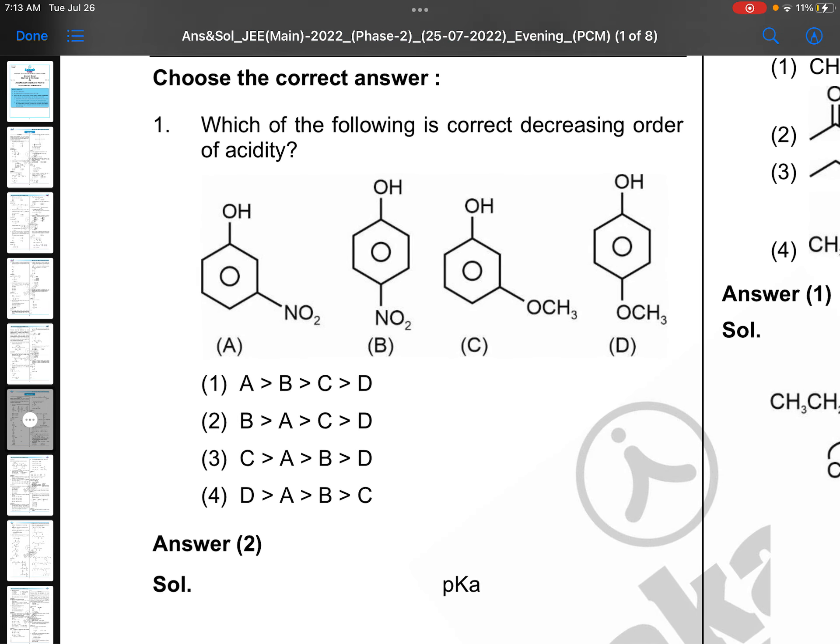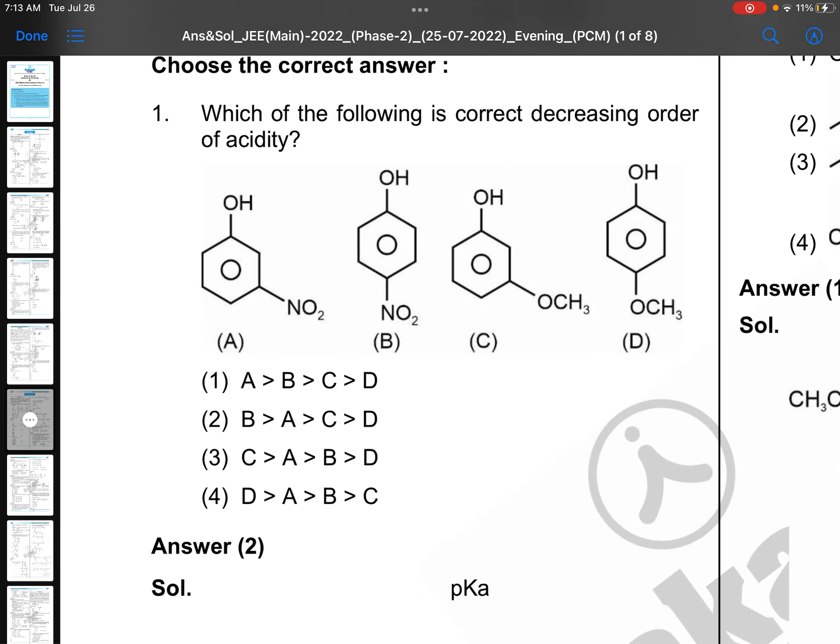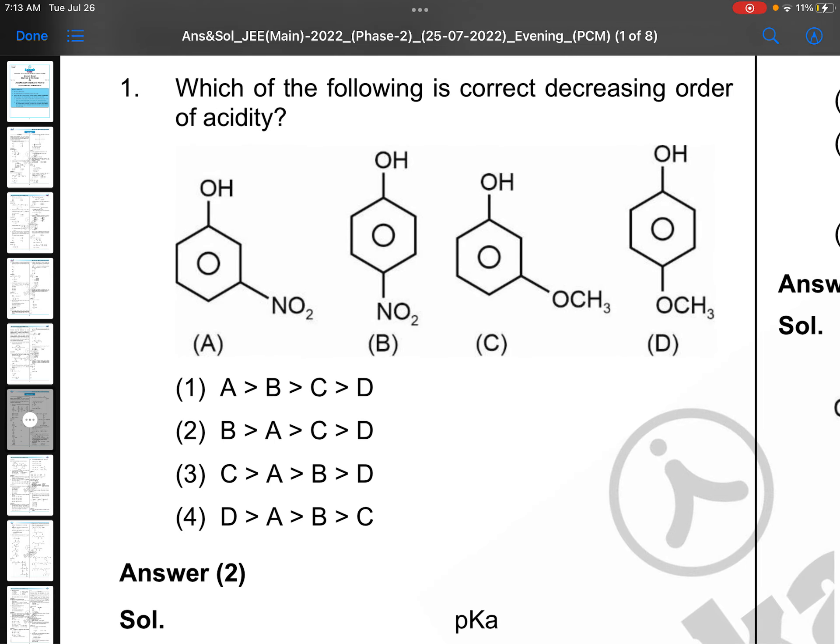Choose the correct answer. Which of the following is correct decreasing order of acidity? Very easy question. Phenol's acidic nature is increased by NO2 groups at para position, so option B is best. Then A. OCH3 group is +M group at para. OCH3 is -I at meta position. So the right answer is BACD.